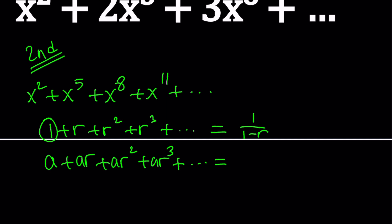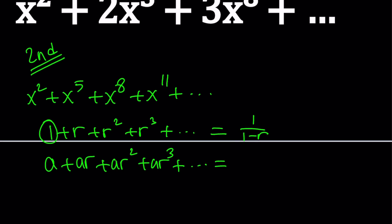The common ratio is still the same, but we have a different first term, which is different from 1. And this will be just a over 1 minus r, because we can factor out an a, or we can multiply both sides by a. Does that make sense?